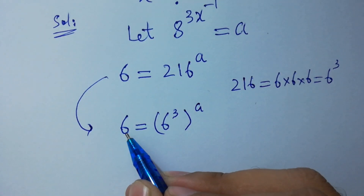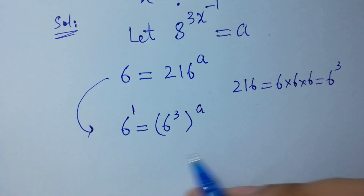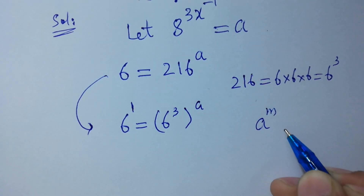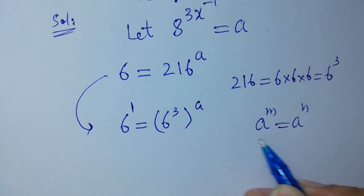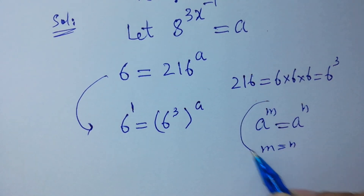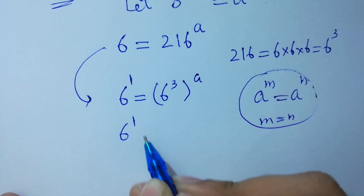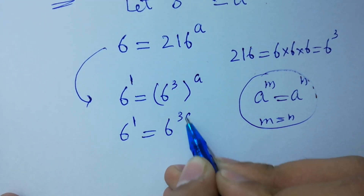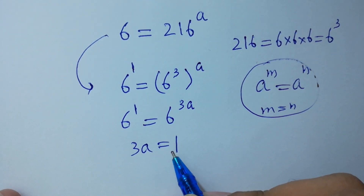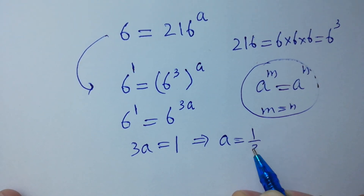And it can also be written as 6 to the power 1. Since, as we know that if a to the power m equals a to the power n, then m equals n. So we can write 6 to the power 1 equals 6 to the power 3a, and therefore 3a equals 1. I hope you understood. So we have a equal to 1 over 3.